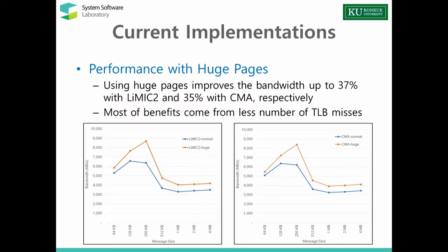We can apply one of these approaches to reduce per-page overheads. This slide shows the bandwidth performance numbers — the left graph shows LIMIC numbers and the right shows CMA numbers. The green line represents performance with normal pages and the orange line represents bandwidth with huge pages. We can see that with huge pages we could improve bandwidth by up to 37% and 35%. But it turned out that most of the benefits came from fewer TLB misses during data copy, and surprisingly the number of iterations remained the same.